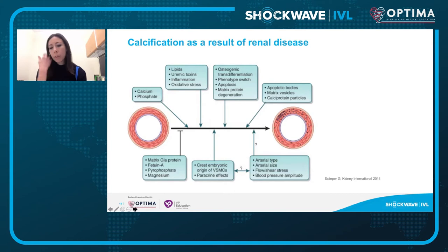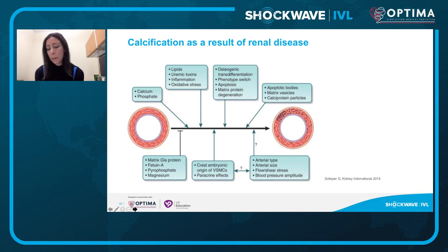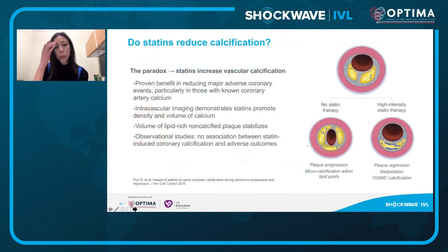Renal dysfunction results in many accelerators of vascular calcification. Increased phosphate results in vascular calcification and stiffness, leading to hypertension. Patients with end-stage renal disease on dialysis may have increased inflammation and increased oxidative stress, all working together to promote calcification. It's not just one thing — multiple factors interact simultaneously.